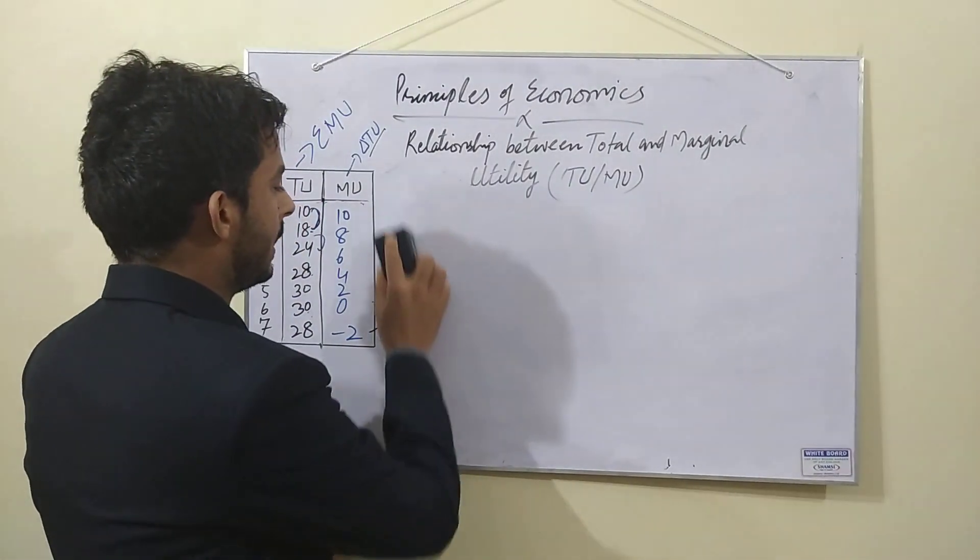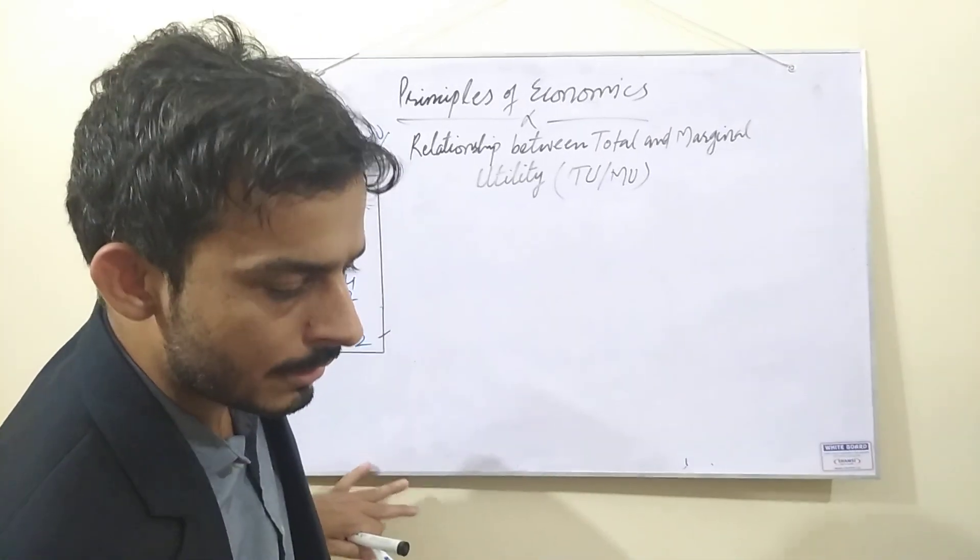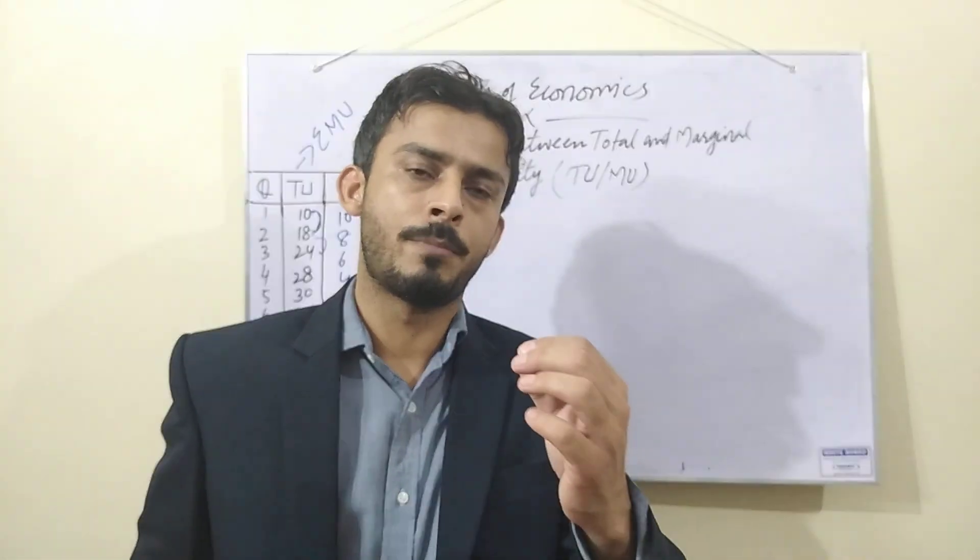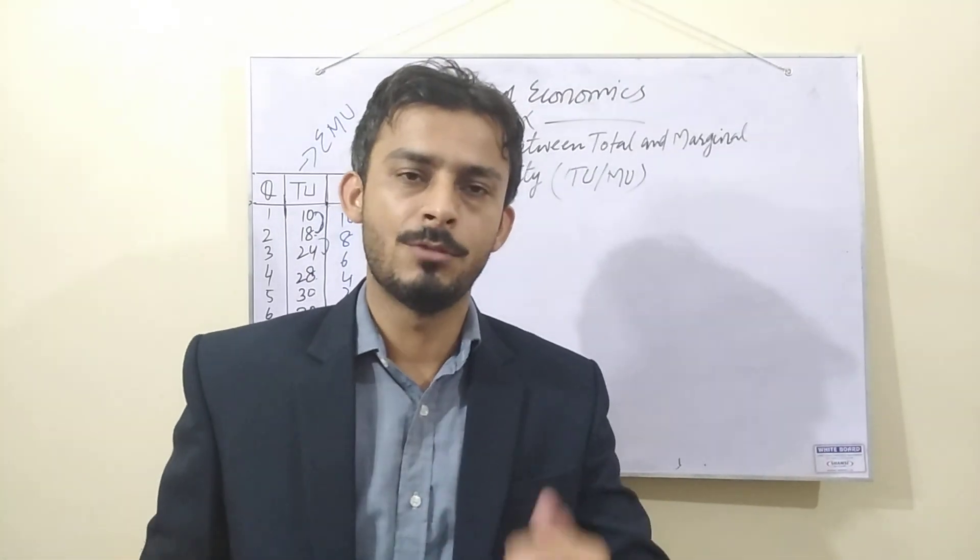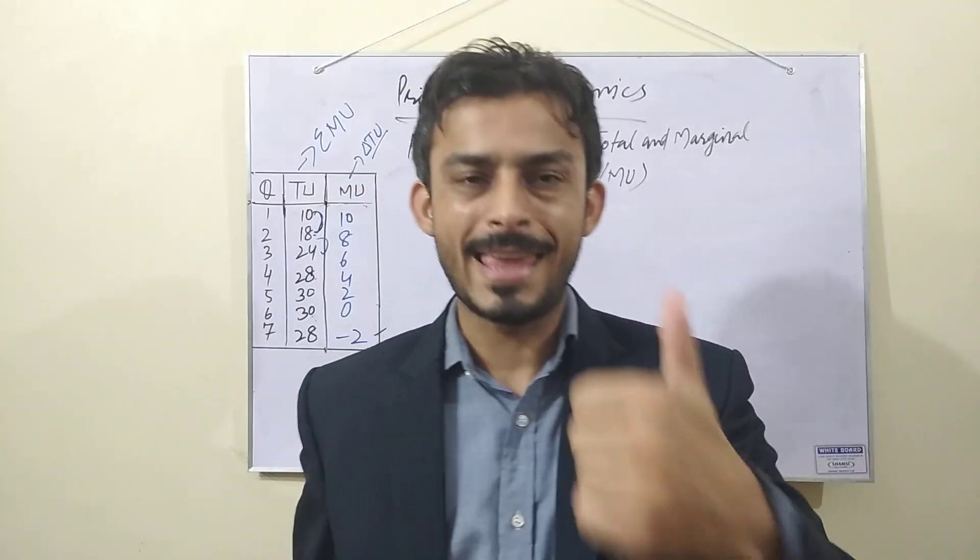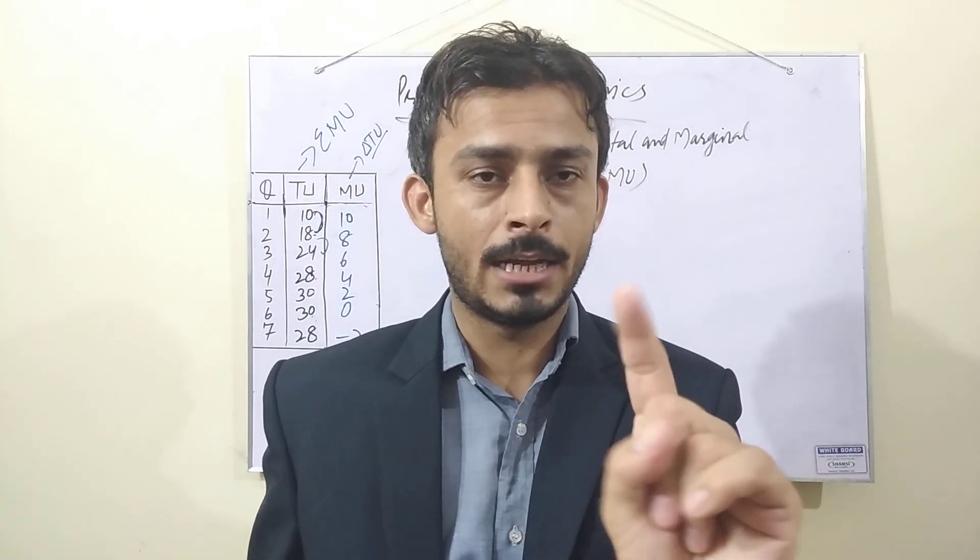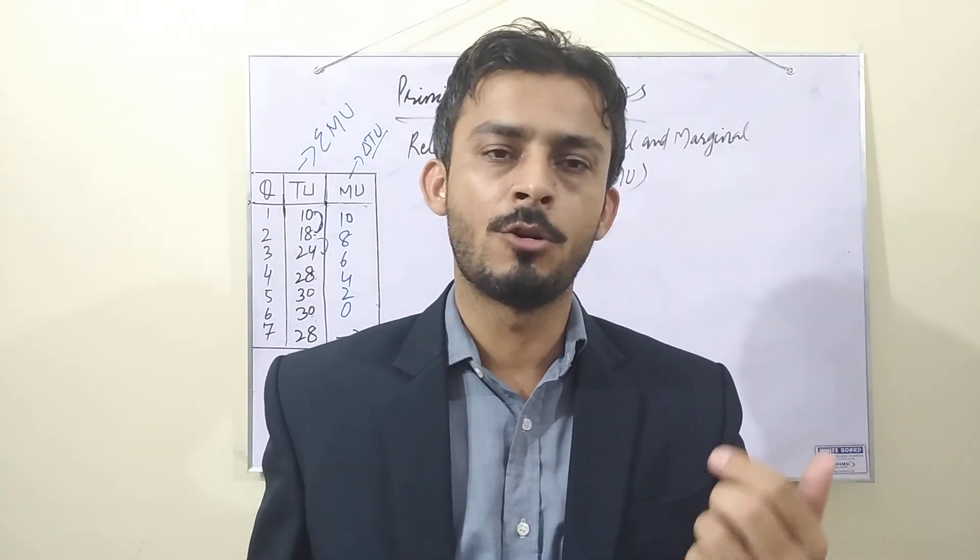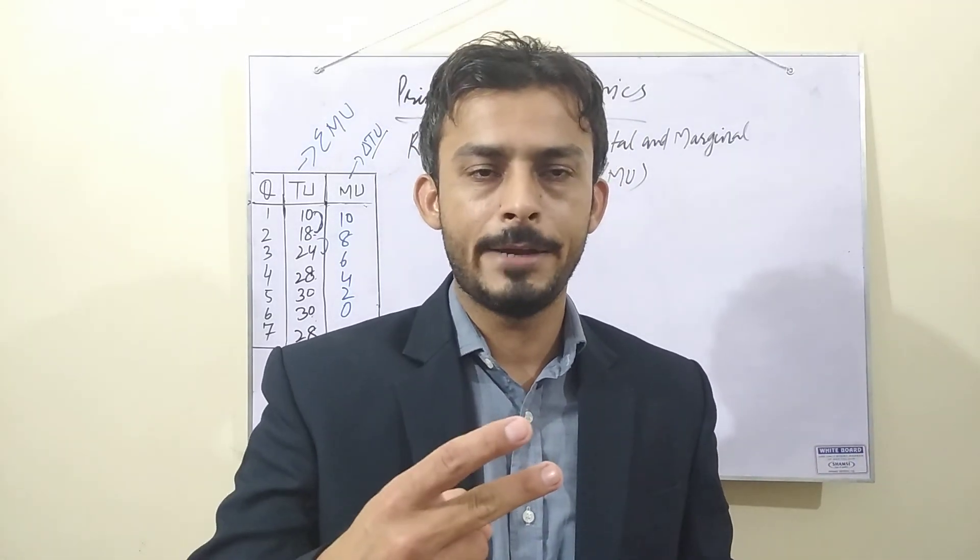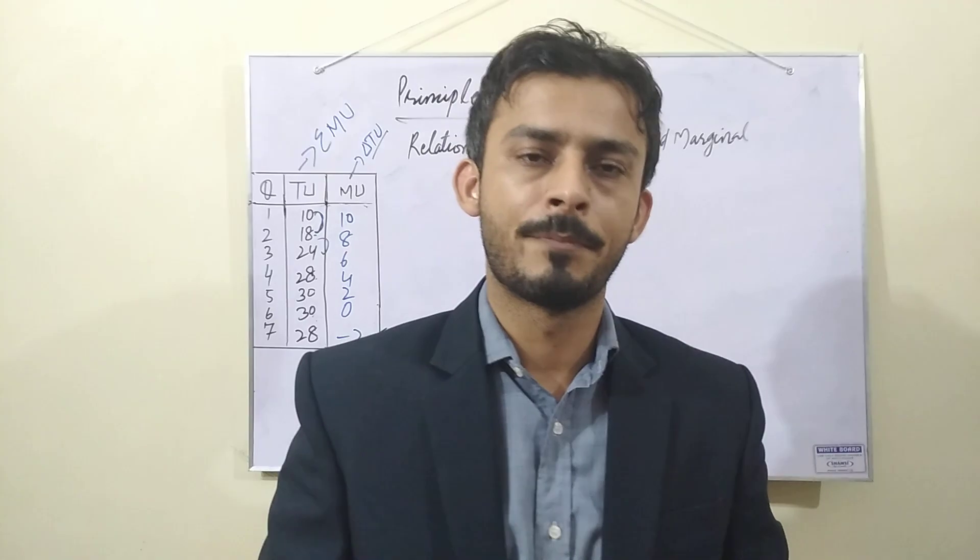Now, when you have calculated, now, the next stage is to plot these values into the graph. Now, there are two ways to plot it. One, you have made one graph, then plot the total and marginal. What is the other way? The other way is to plot it. Let's see.